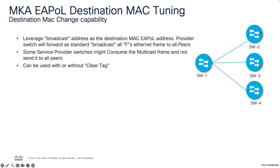The second enhancement is MKA E-POL destination MAC tuning. This feature enables configuring the MKA protocol to use a broadcast destination address for its E-POL messages. Some service provider equipment may not forward multicast frames properly, which can disrupt MKA key exchanges. Setting the destination address to broadcast ensures E-POL frames are forwarded across all provider equipment, avoiding issues where specific switches might drop or ignore multicast frames.